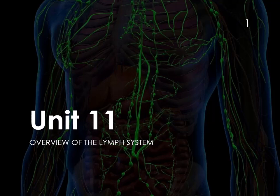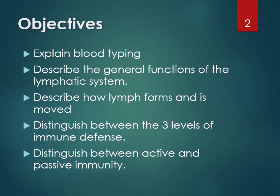Hi everybody. This is unit 11, which is the lymph system. We're going to talk about blood typing, the functions of the lymph system, how lymph forms and how it's moved, and then mostly we're going to talk about the immune system, the three levels, and how active and passive immunity works.